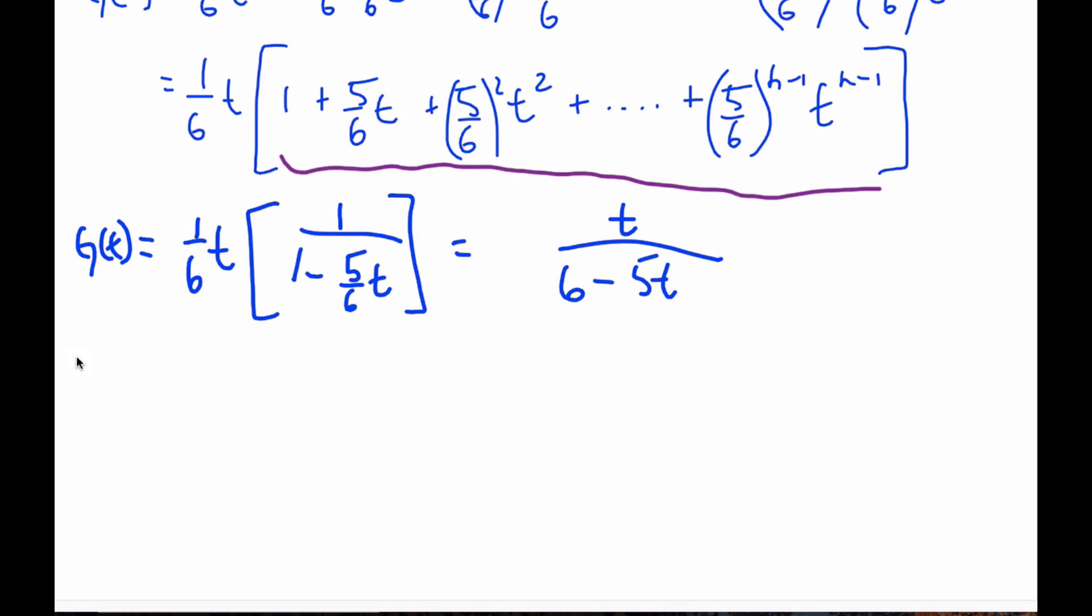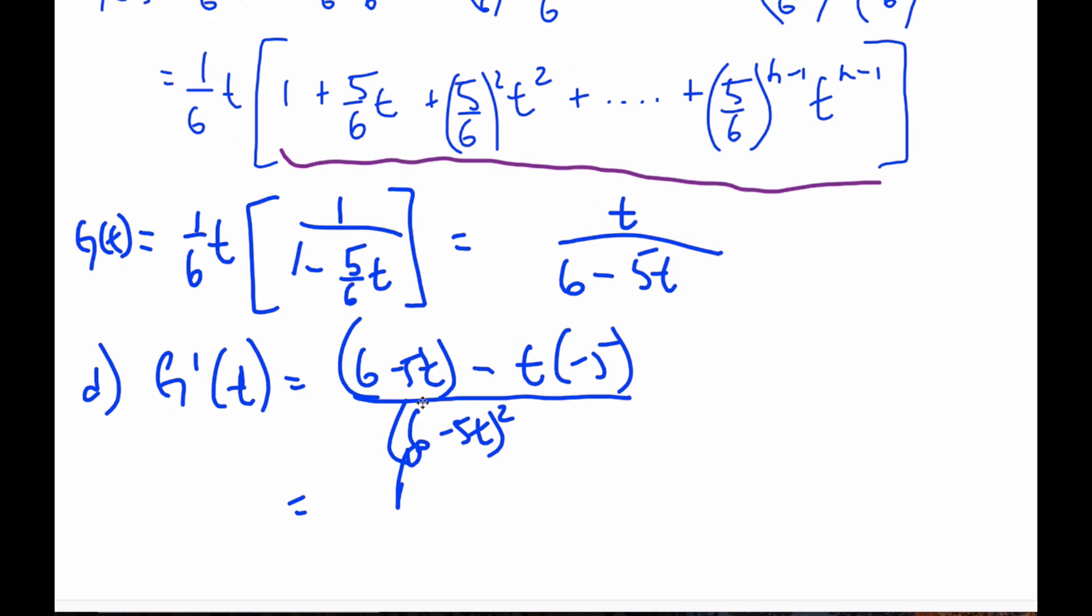And so D part then says to calculate G prime at one. When I calculate G prime at one, I have to employ the quotient rule. So six minus five T squared, I'm going to do T first of all, and six minus five T times one minus T times negative five. And so if I clean this up, I get six. These will cancel. This is a plus five T minus five, it will cancel over six minus five T squared.